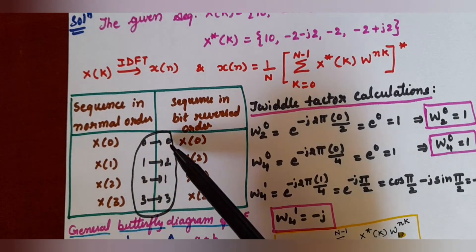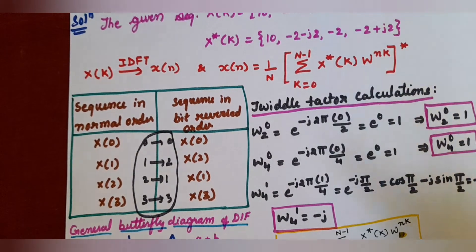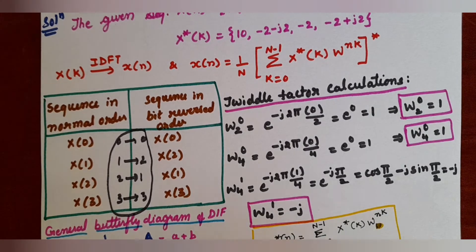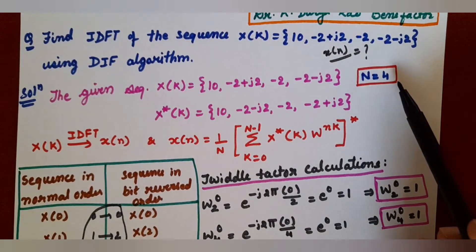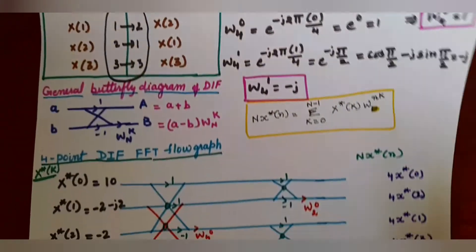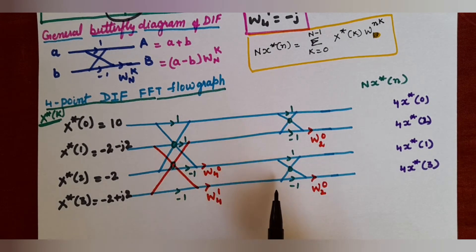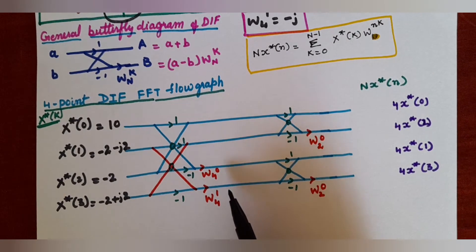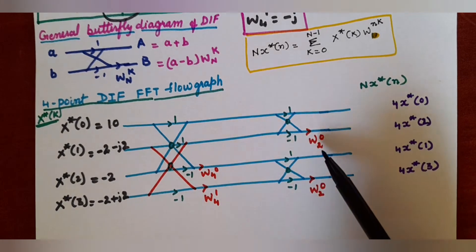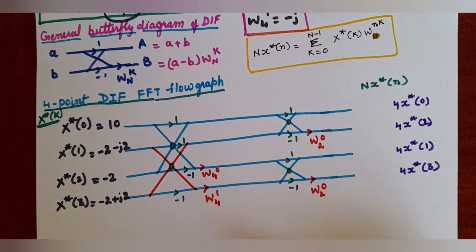After knowing the bit reversal table, do the twiddle factor calculations. For this you have to know what twiddle factors are used in this flow graph. As the length of the given sequence N=4, you have to draw a 4-point DIF flow graph, which will have two stages. The twiddle factors involved are: W_4^0, W_4^1, and W_2^0.